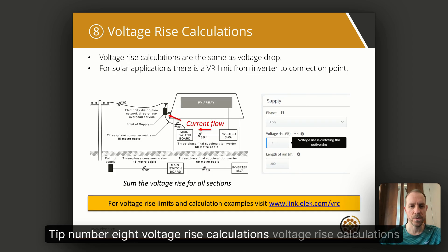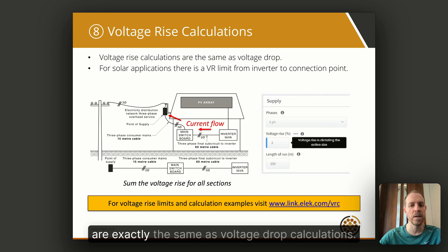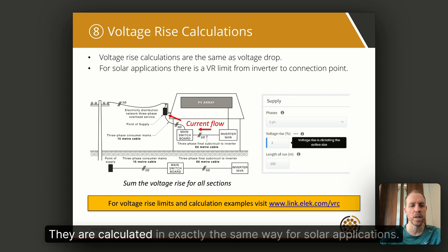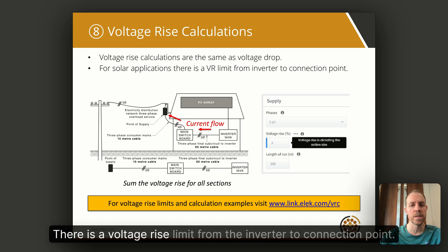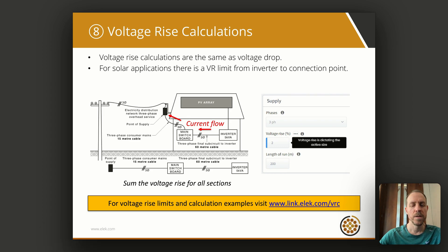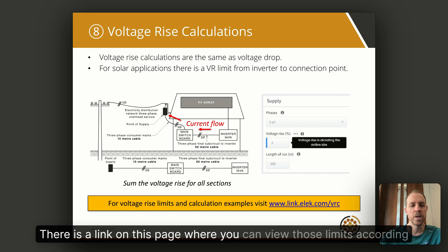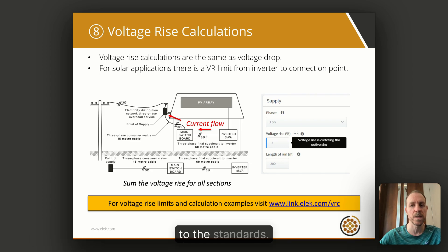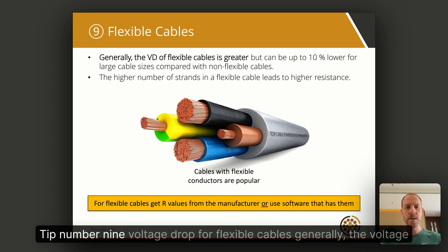Tip number eight: voltage rise calculations. Voltage rise calculations are exactly the same as voltage drop calculations — they are calculated in exactly the same way. For solar applications, there is a voltage rise limit from the inverter to the connection point. There is a link on this page where you can view those limits according to the standards.